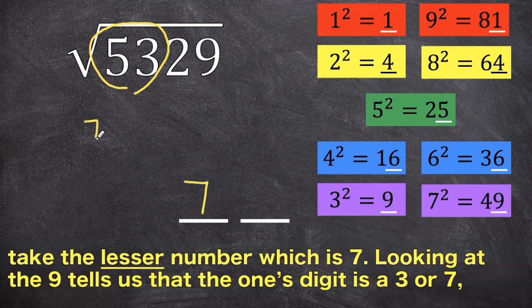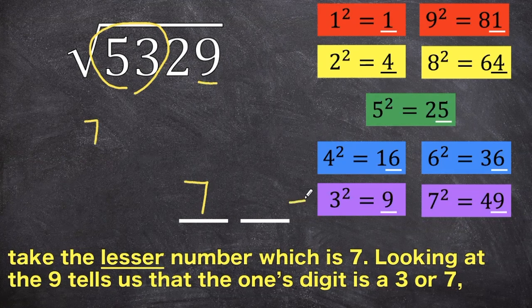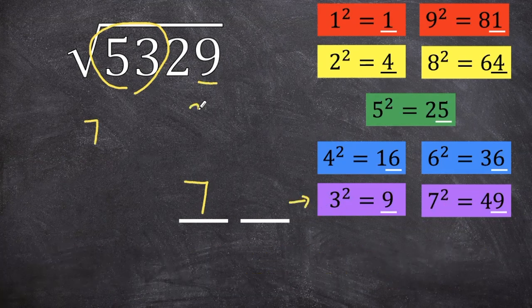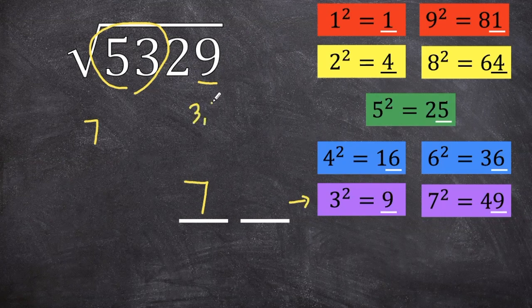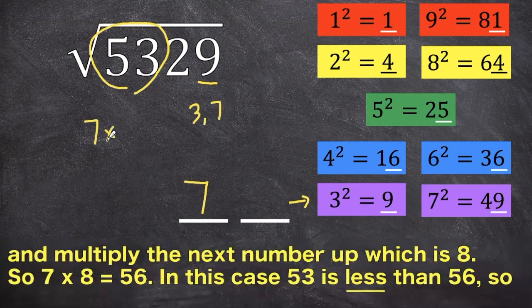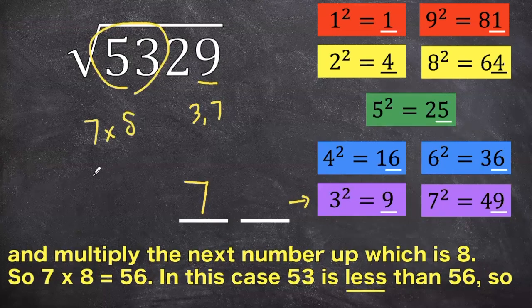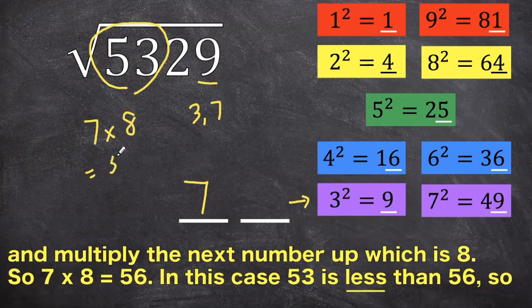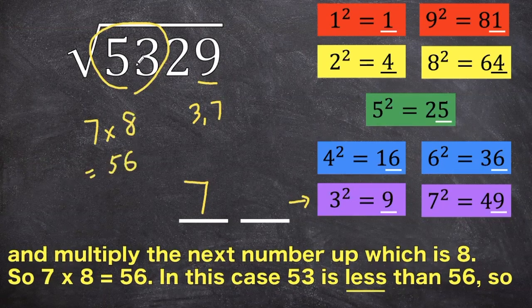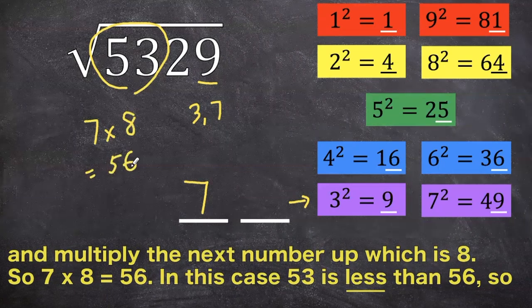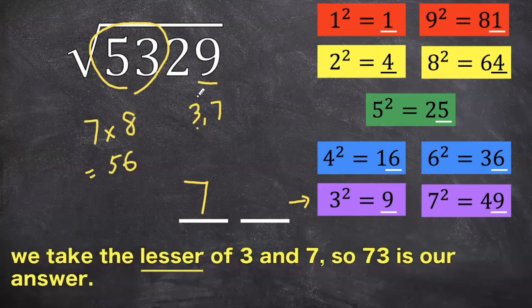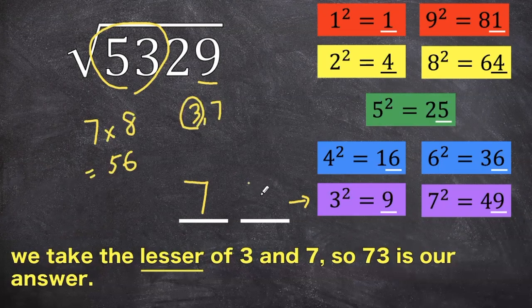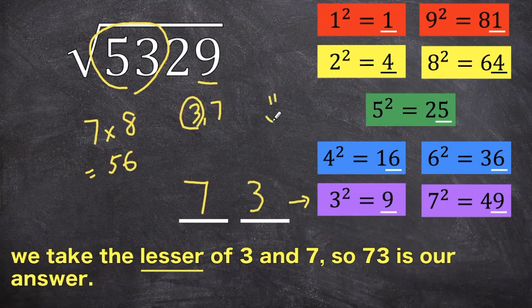So I'm going to write the 7 right here, and then we look at the 9, which tells us that the 1's digit is going to end in a 3 or a 7, and then multiply the next number up, which is 8, so it's 56. In this case, the 53 is smaller than 56, so we take the lesser of the number, so 73 is our answer.